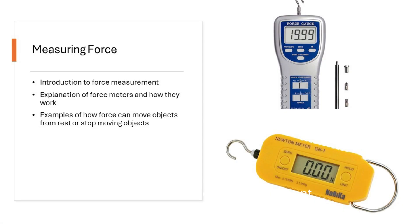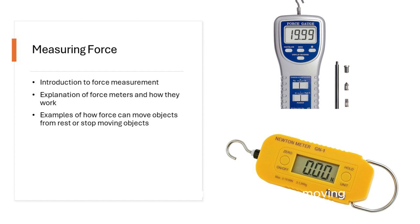Measuring Force. We can measure how strong a force is using special tools called force meters. Force meters have a spring inside that moves when a force is applied, and we can then read the scale to see how strong the force is. A force can make something that's not moving start to move, or it can stop something that's already moving — for example, pushing a toy car to make it move or using your hand to stop a rolling ball.